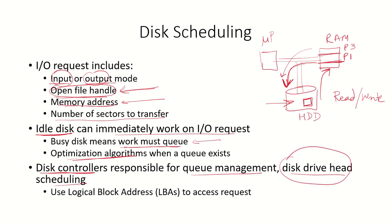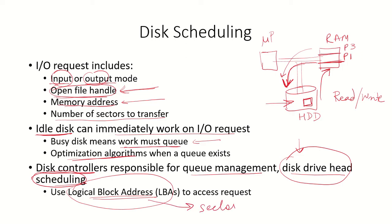The disk drive head scheduling determines how the head moves to reach a particular track. The disk controller decides the scheduling — how a particular request is handled. The address sent to the controller is a logical block address, which is the block address of the file. The mapping from logical block address to the actual physical sector is not known to the operating system; it is handled by the disk controller.